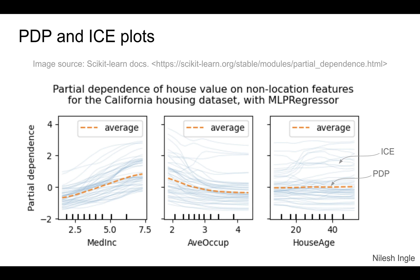The partial dependence plot shows us the average curve. With ICE plots, we can plot each individual sample, shown here by faint blue lines, and also overlay a PDP curve on top, shown by the dotted orange line which is the average. The ICE plot provides additional information — for example, in the median income feature, some lines are steeper than others, showing variation between samples. The average trend is that as median income increases, house value also increases.